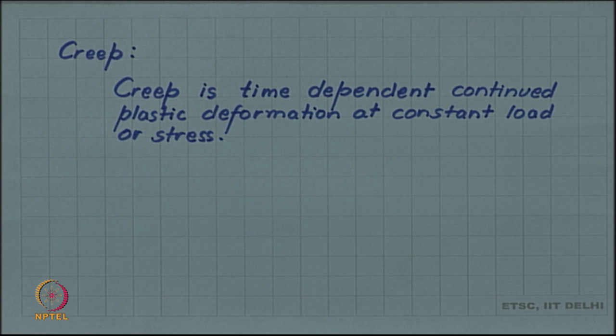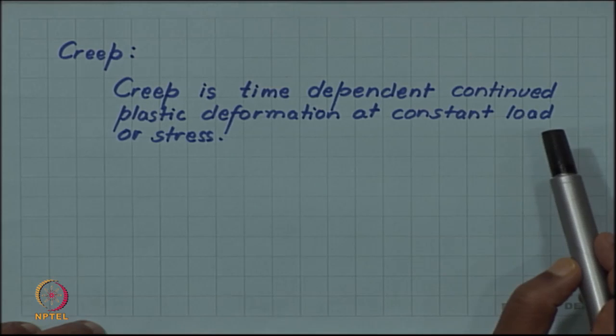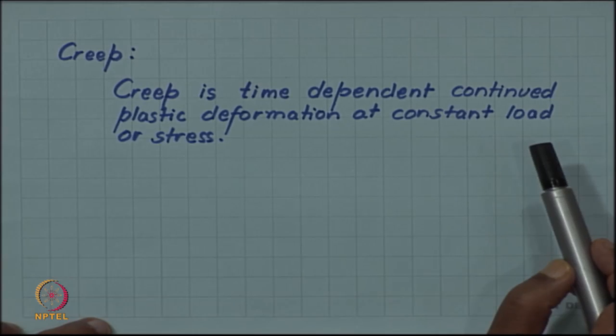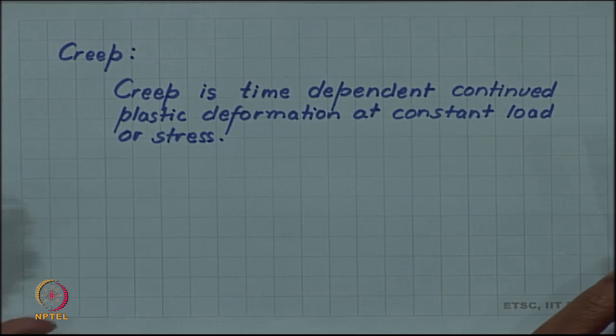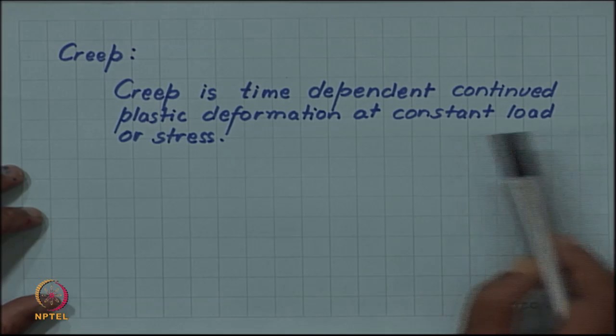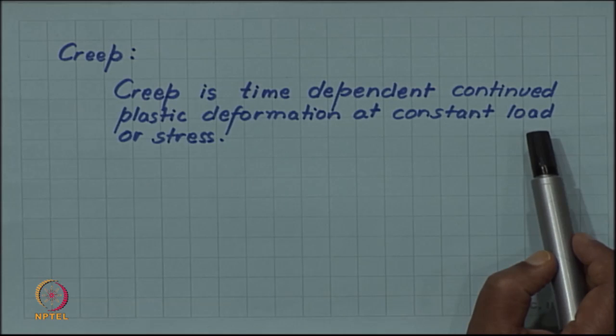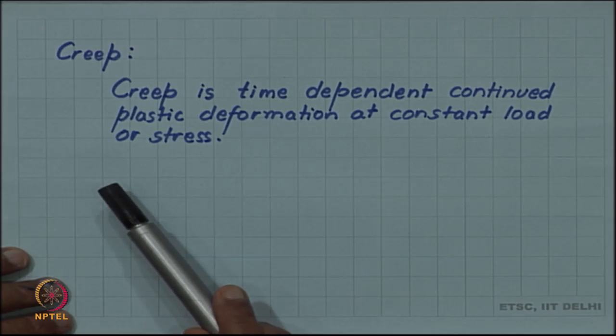As you saw in the case of that demo, one of the springs was continually deforming as a function of time although we had put no load on it. Although we had not put any external load on it, its own self weight was still acting on it, but that self weight was constant. So under constant load spring 2 was continuously deforming. This kind of phenomenon is called creep.